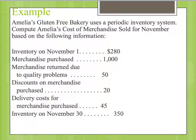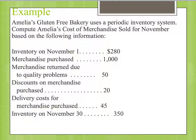Let's take a look at an example. Amelia's Gluten-Free Bakery uses a periodic inventory system. Compute Amelia's cost of merchandise sold for November based on the following information: Inventory November 1st — $280; merchandise purchased — $1,000; merchandise returned due to quality problems — $50; discounts on merchandise purchased — $20; delivery costs for merchandise purchased — $45; inventory on November 30th — $350.